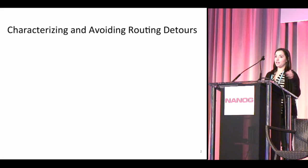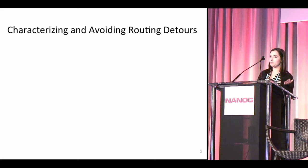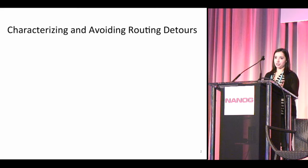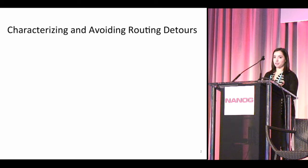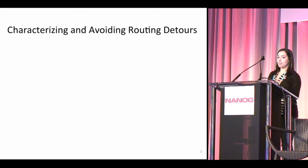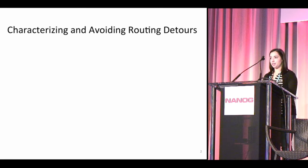Hi, I'm Annie Edmondson. I'm a PhD candidate at Princeton, and I'll be talking about some work I did with a few other folks at Princeton on studying transnational routing detours through surveillance states.